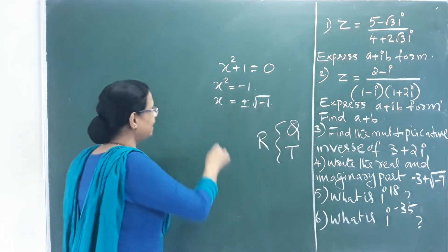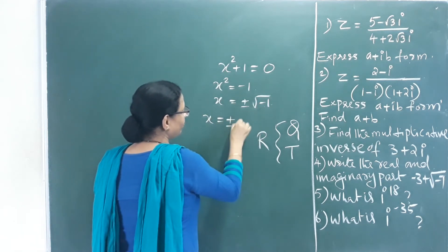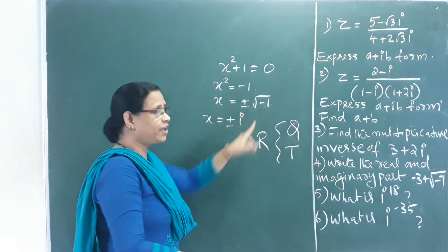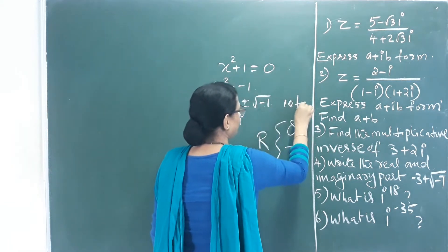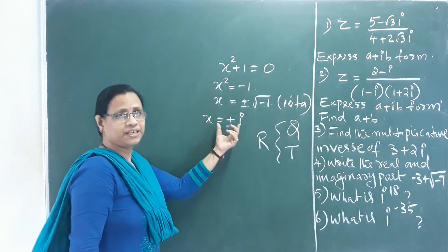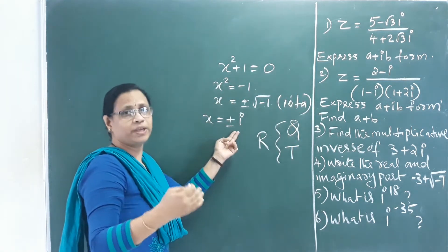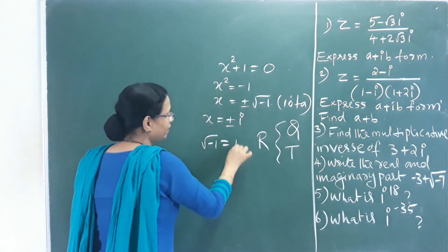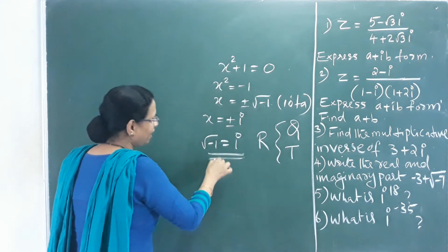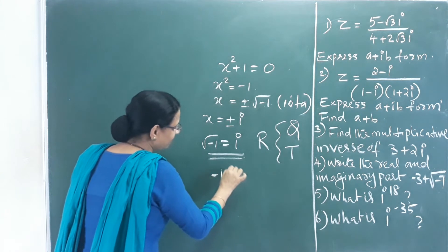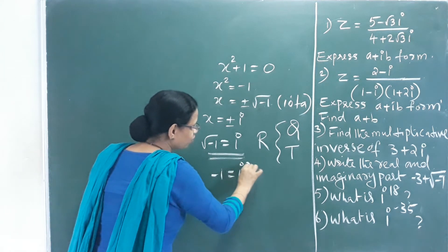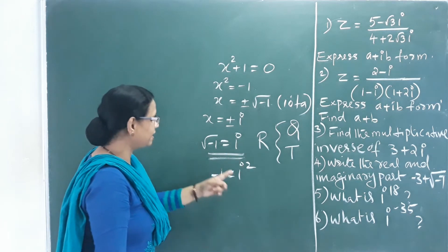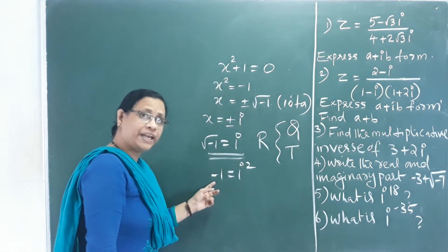To solve this, we define x = ±i, where i is called Imaginary, also known as iota. So √(-1) = i, meaning i² = -1. The equation x² + 1 = 0 has two imaginary roots.